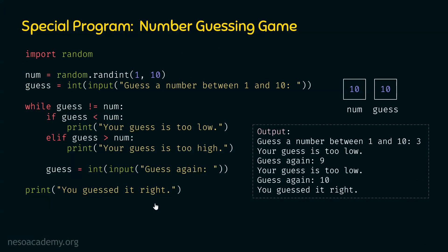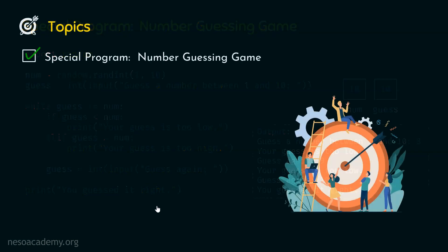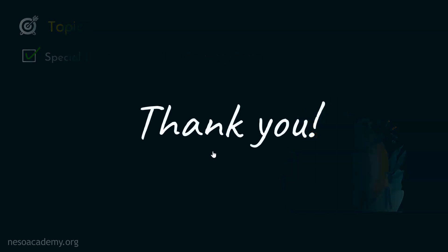We have verified this program in Visual Studio Code and confirmed that the code is working correctly. This means we are done with this topic — special program Number Guessing Game — and done with this lecture. Thank you for watching this presentation. I will see you in the next one.